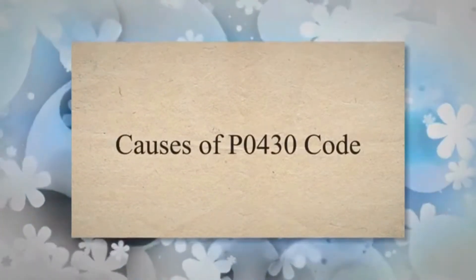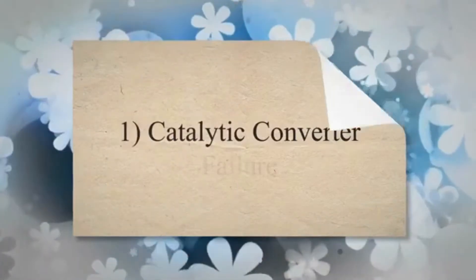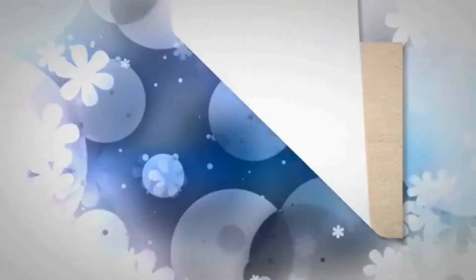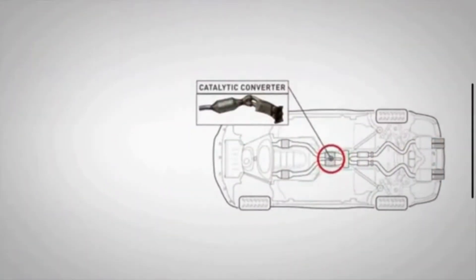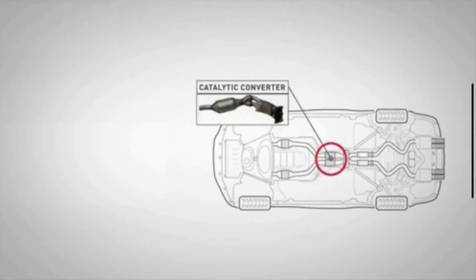Causes of P0430 code. 1. Catalytic Converter Failure. The most common cause of a P0430 code is a failing or inefficient catalytic converter in Bank 2. Catalytic converters can wear out over time, become clogged, or suffer damage that reduces their efficiency.